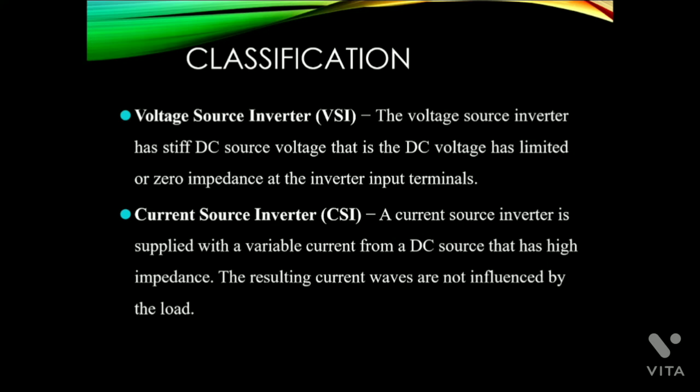Now we will see the classification: voltage source inverter and current source inverter. The voltage source inverter has a stiff DC source voltage, meaning the DC voltage has limited or zero impedance at the inverter input terminals. In a current source inverter, it is supplied with a variable current from a DC source that has high impedance, and the resulting current waves are not influenced by the load.